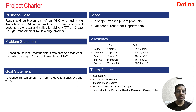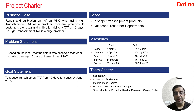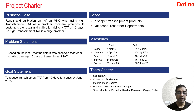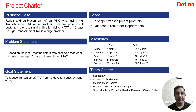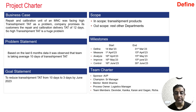The team set a goal to reduce the transshipment TAT from 10 days to 3 days by June 2023. The scope of the project includes transshipment products only — other departments and products were out of scope. The team started the project on 14th March 2023 and finished it by 30th June 2023. A global cross-functional team was involved because different regions, logistics teams, and other areas were part of the effort.